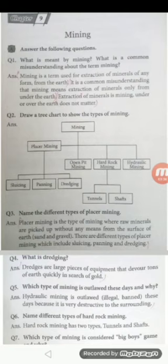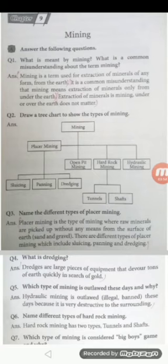Question number two: Draw a tree chart to show the types of mining. Mining is further divided into types including open pit, hard rock, and hydraulic mining. Placer mining is further divided into three parts: sluicing, panning, and dredging. Hard rock mining is further divided into two parts: tunnels and shafts. Question number three: Name the different types of placer mining. Placer mining types include sluicing, panning, and dredging.